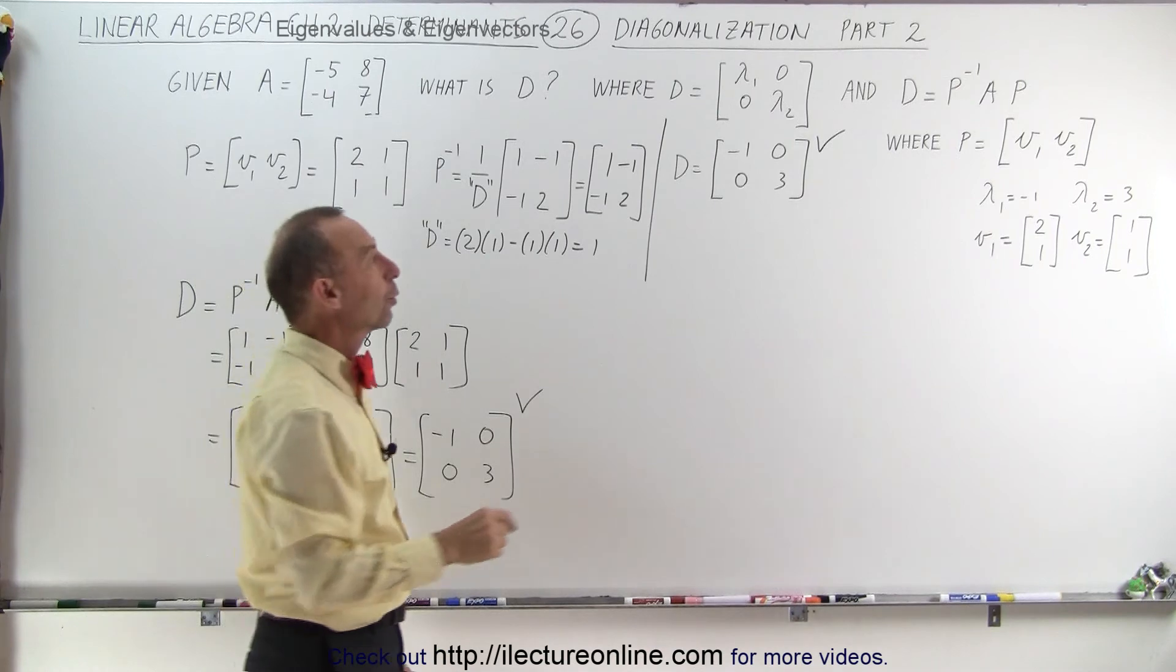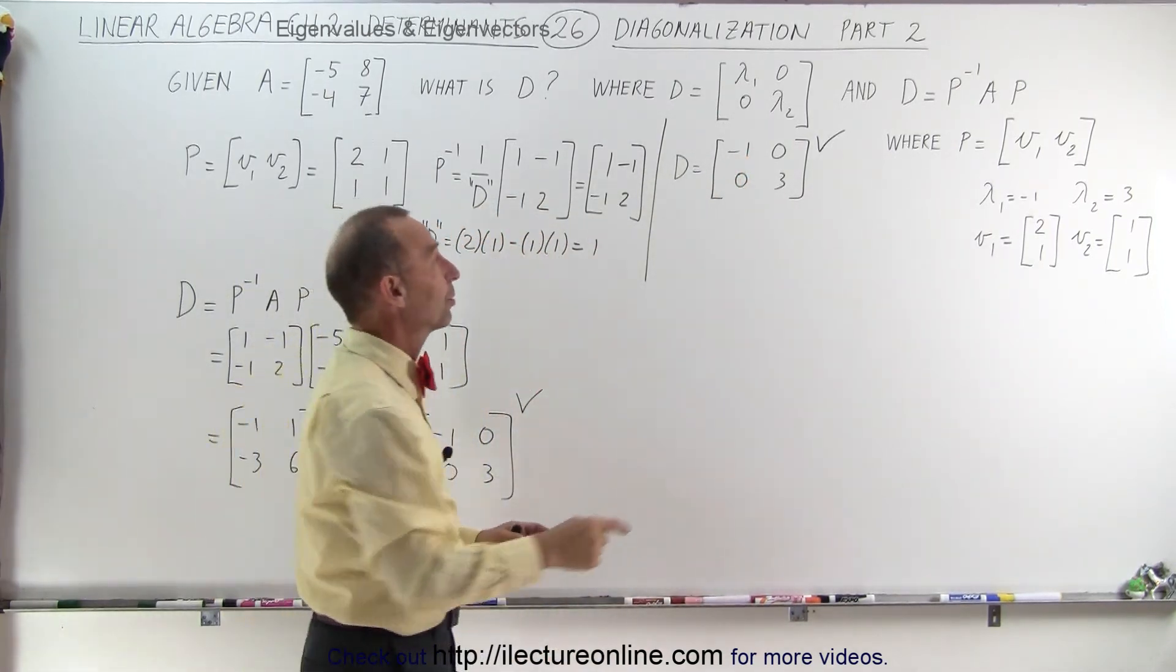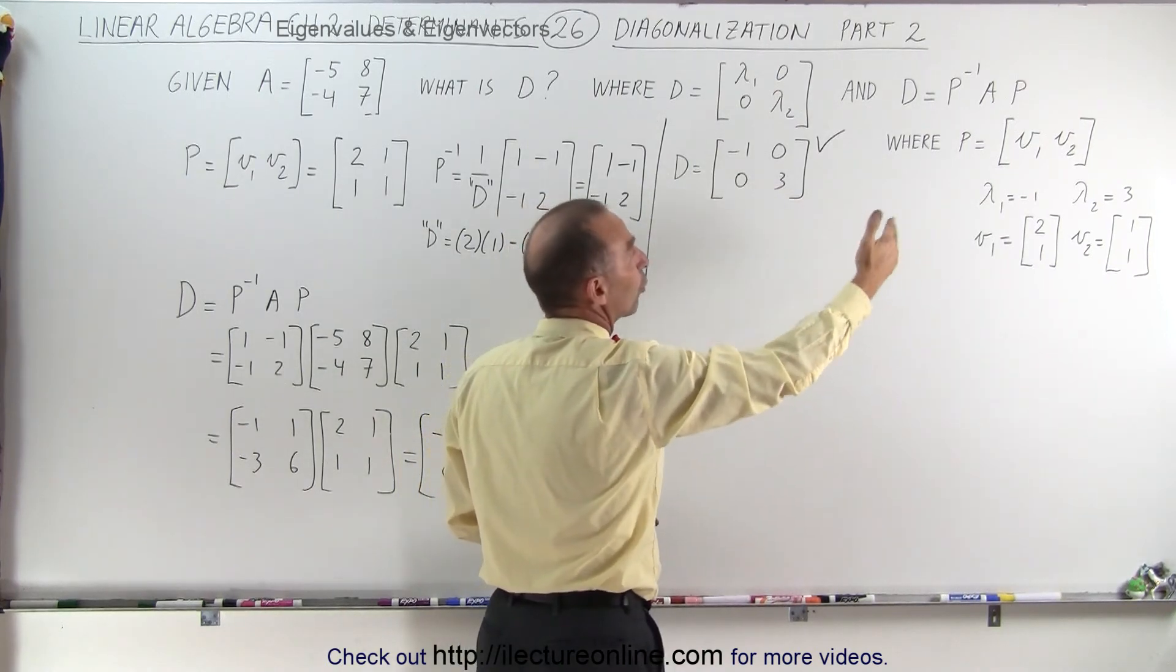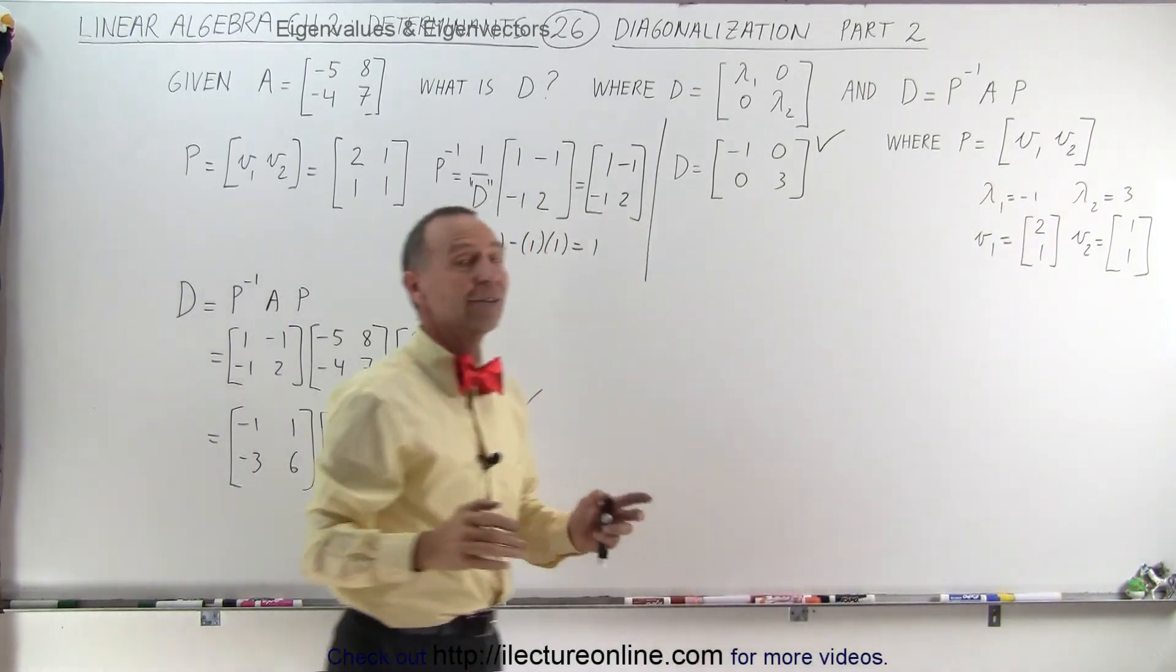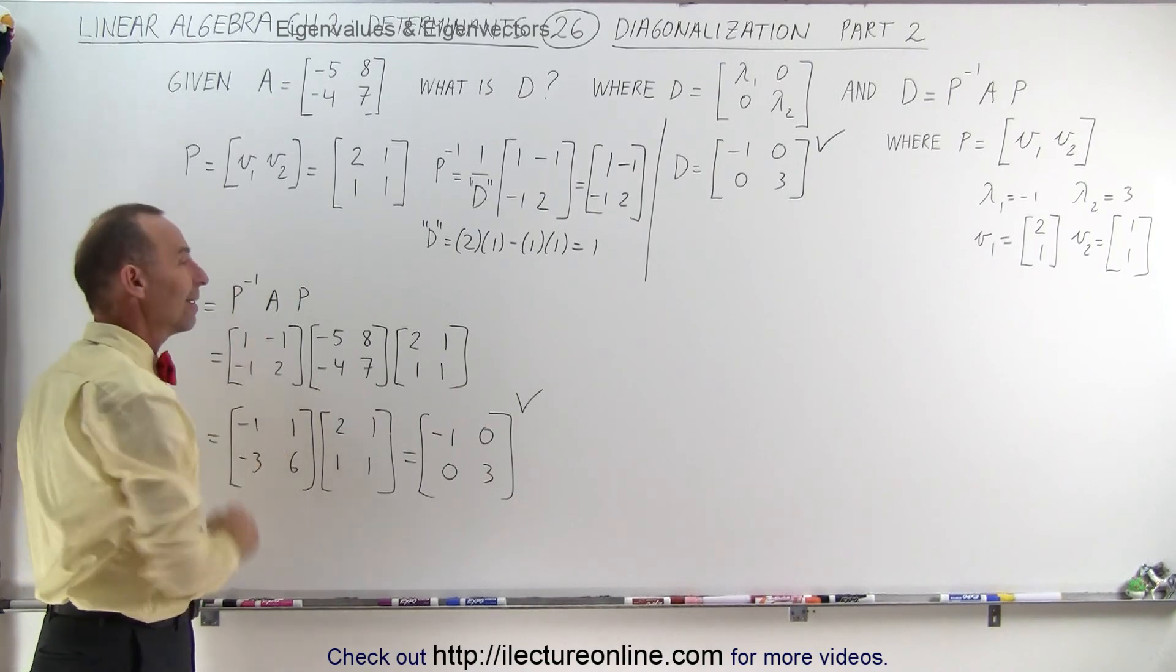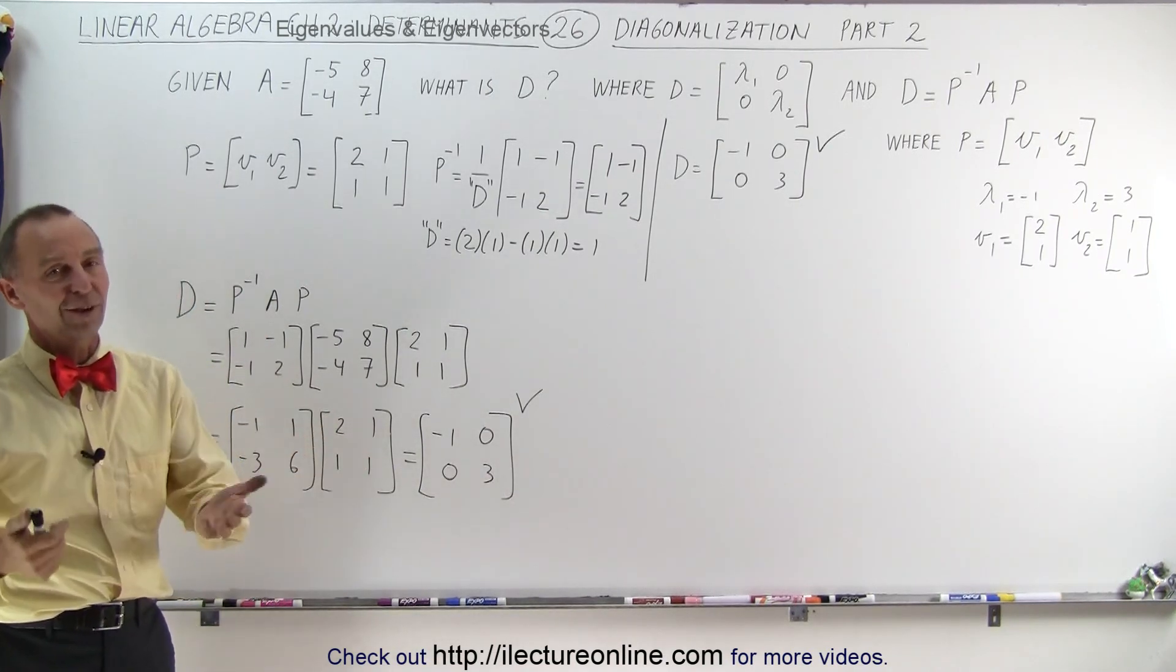On the next video, we're going to reverse the order of these to show you that it didn't matter that we put the 3 up there and the -1 down here. Again, we'll then find the corresponding P matrix. We'll now have these two reversed and you'll see that it should not make any difference. We should still be able to get the exact same value here and we'll do that on the next matrix just to make sure it doesn't make any difference.